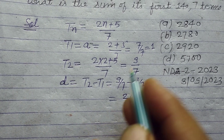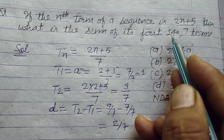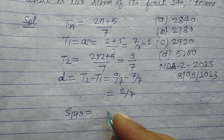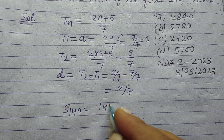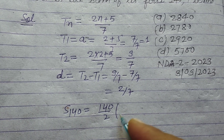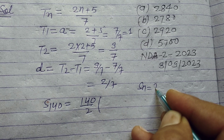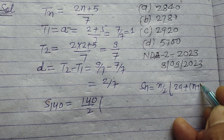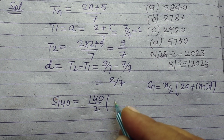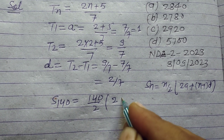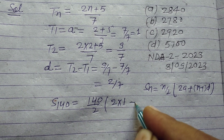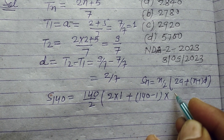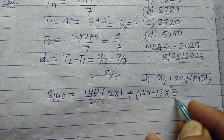Here students, we want to find out the sum of 140 terms. So S140 equals 140/2 times the formula of Sn, which is n/2 times (2a + (n−1)×d). So we have 2a where a is 1, n is 140, so (140−1) times d, and d is 2/7.